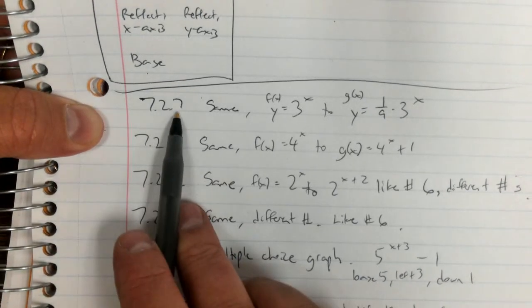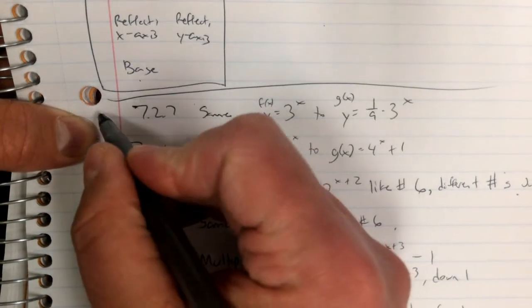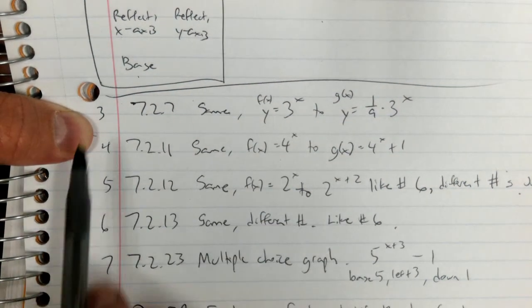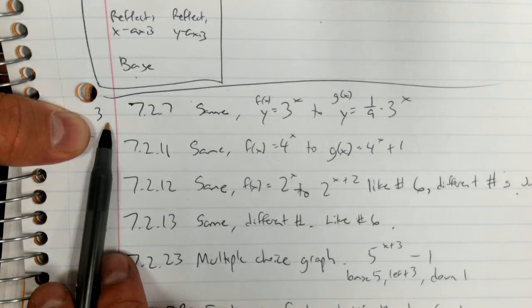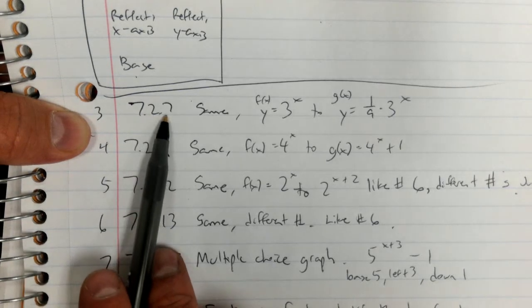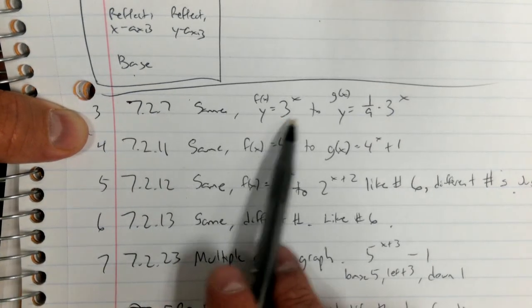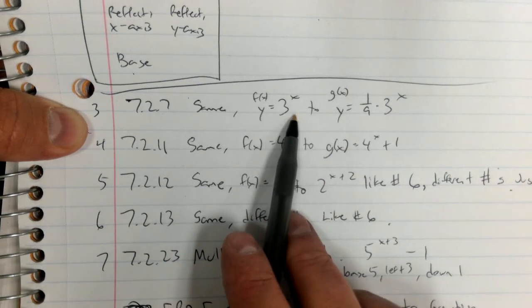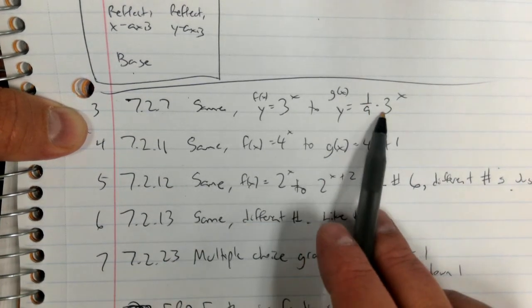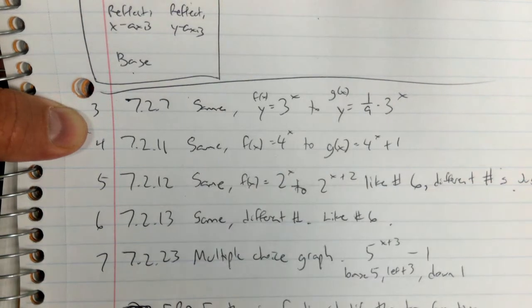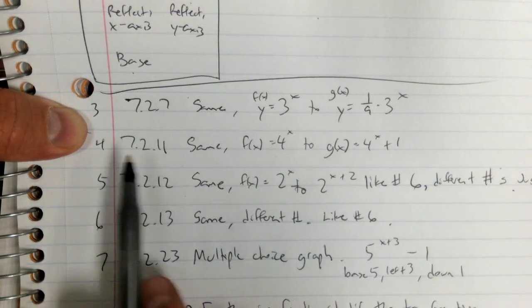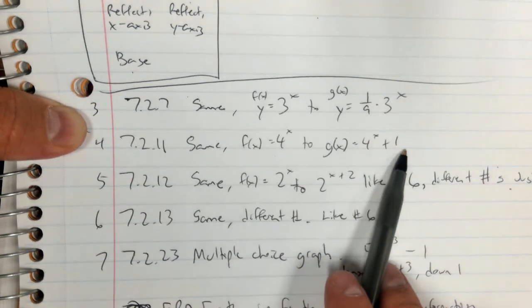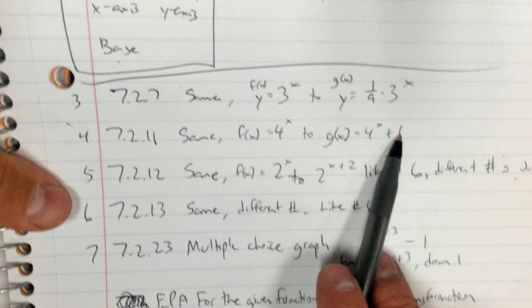Number 7, well this is 3, 4, 5, 6, 7, 8. On problem 3 in your math excel, which is 7.2.7, I basically just saw variations of the equation. On this one it said 3^x and then 1/9 times 3^x, and you basically do the same thing. On number 4 you have a base of 4, you have 4^x and then 4^(x+1), which would be a vertical shift.